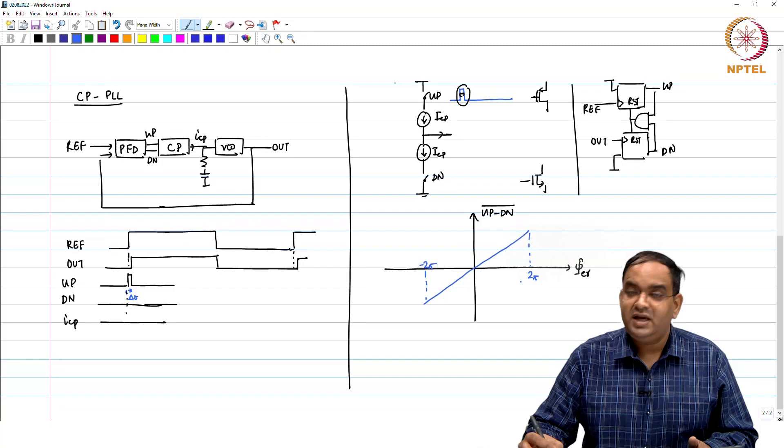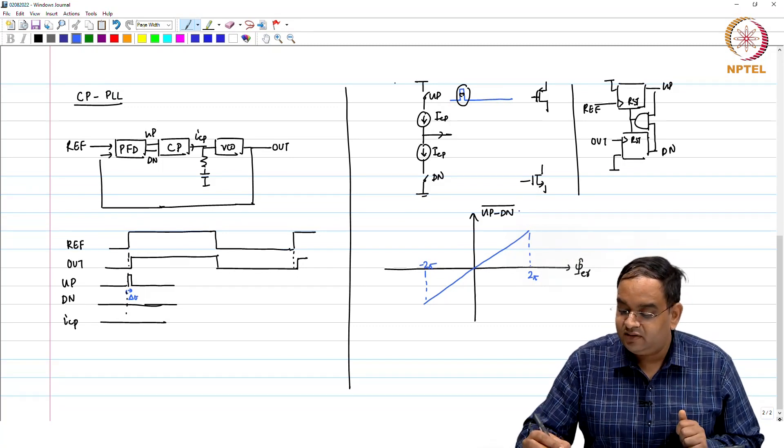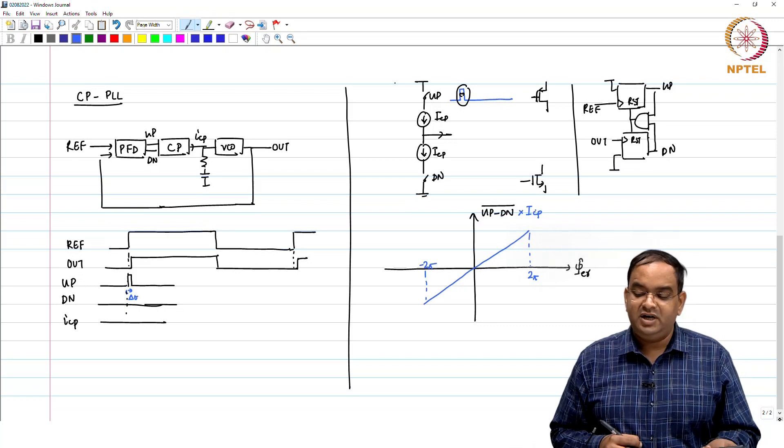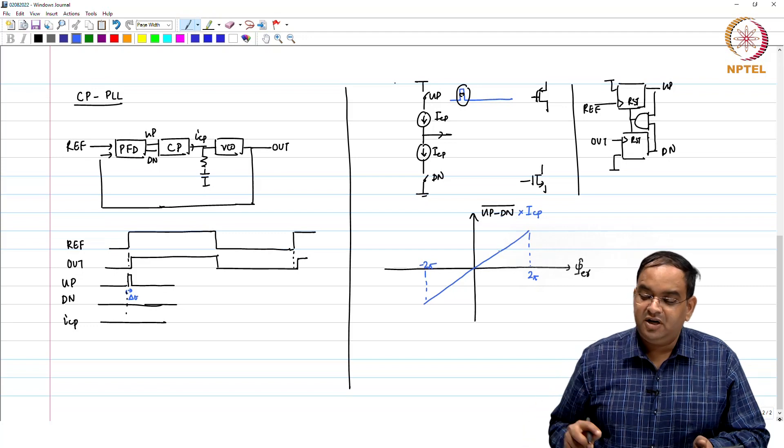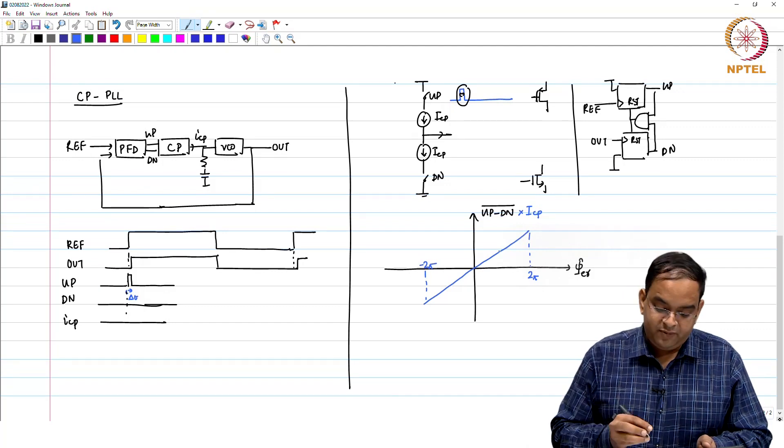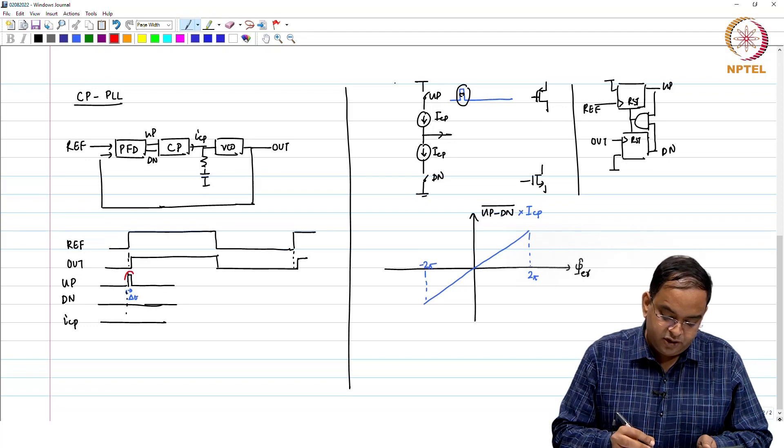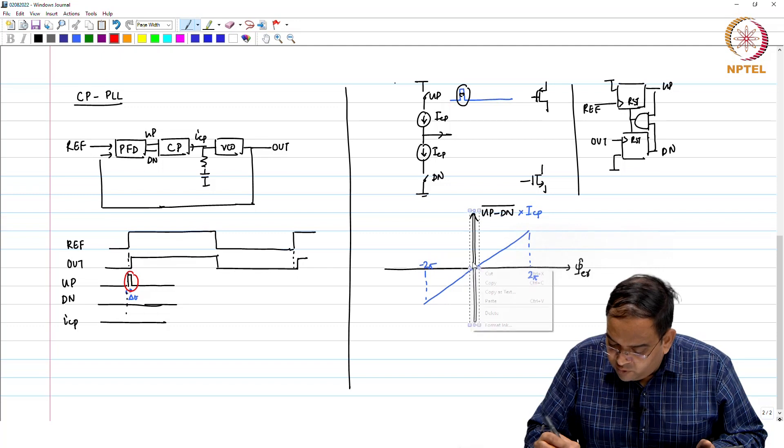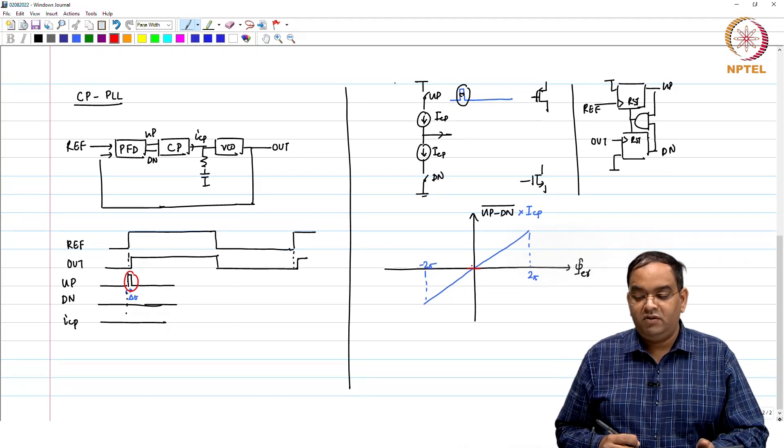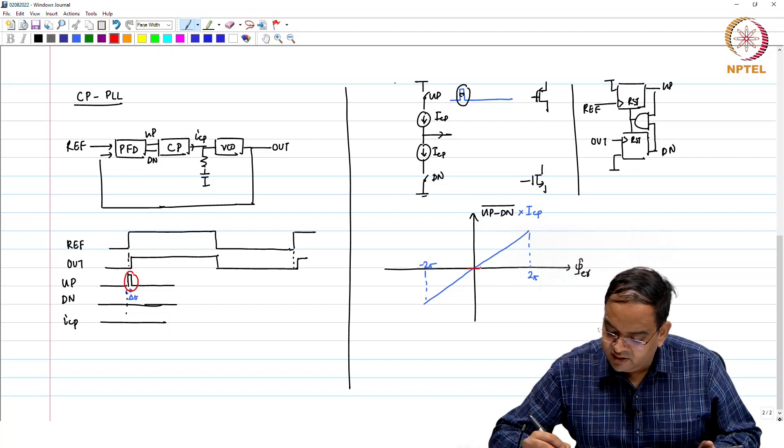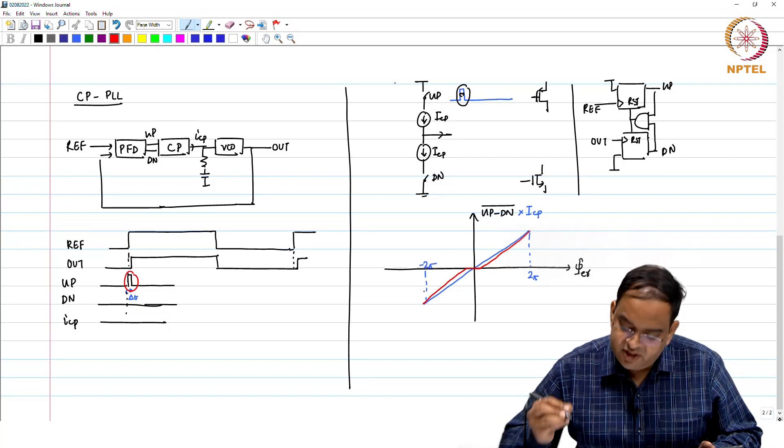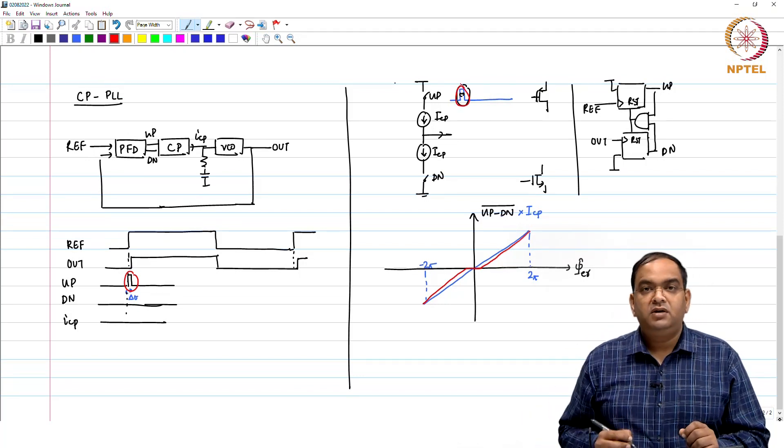Earlier we saw PFD characteristics like up minus down average versus phase error. Previously our characteristics were something like this from minus 2π to 2π. If we are looking at the combined characteristics of the charge pump, then this is up minus down average times ICP. As per our initial PFD analysis, the characteristics will look like this, but what happens because it does not respond to phase error near zero.